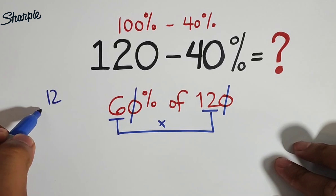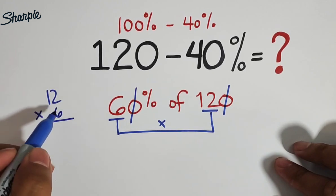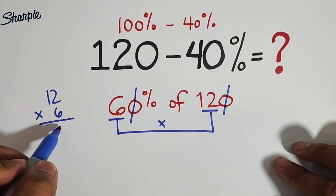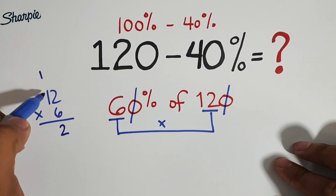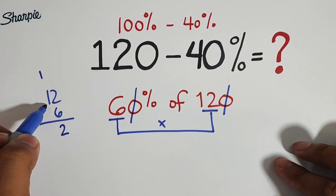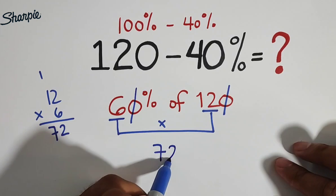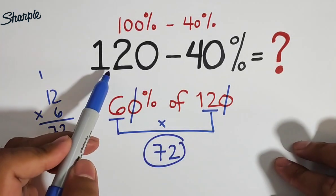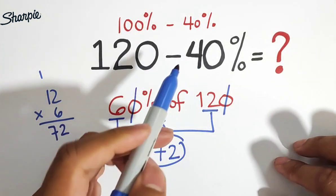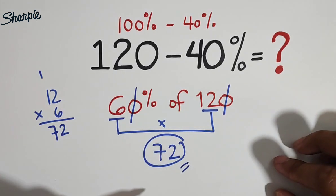6 times 12, again, or 12 times 6, that is equal to how many? This is 12, carry 1, 6 times 1, which is 6 plus 1, that is 7. So we have now the answer of 72. Therefore, the 120 minus 40% is equal to 72.